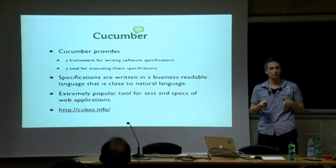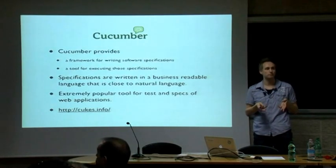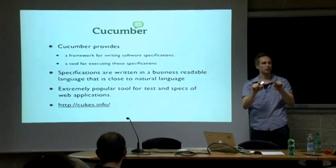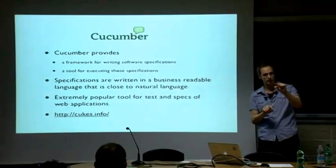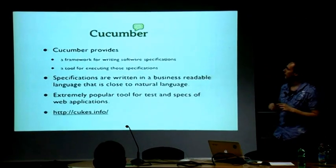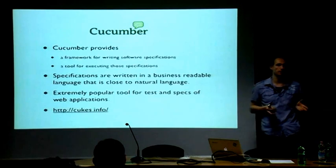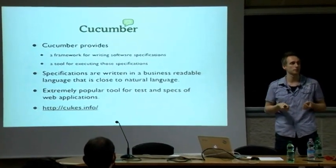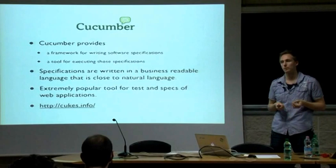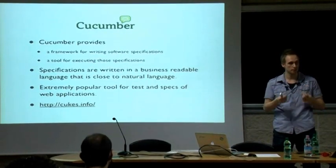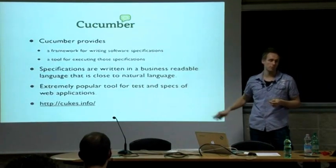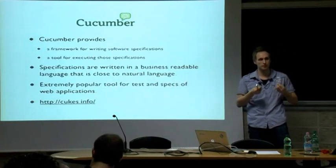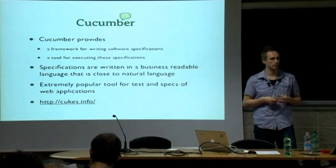Cucumber gives you a framework for writing specifications of what an application should do. You can write down in natural language what the app should do, and at the same time, what you write down can be executed as a test. So it's a use case and a test at the same time — which is very cool. You write these specifications not in a programming language, but in language like natural text. It can be written in your own language, in English, using the concepts from your domain. So it's almost like an executable use case, and it's a very popular tool in the web testing area.